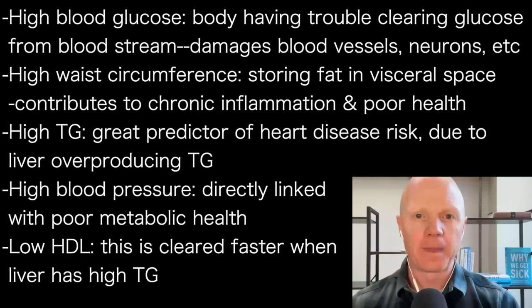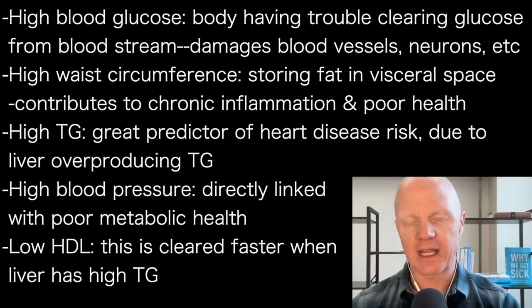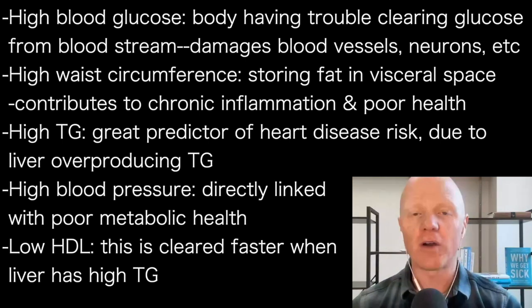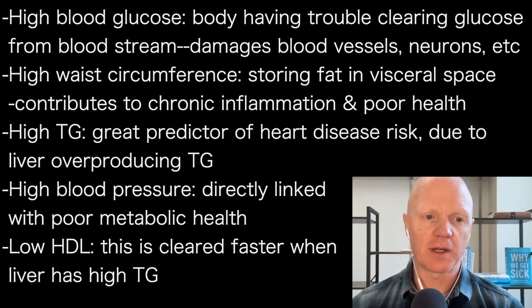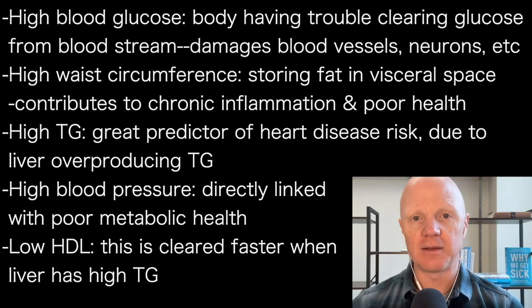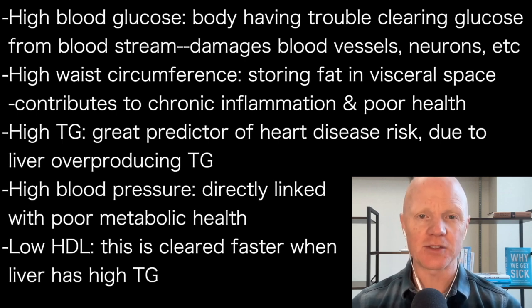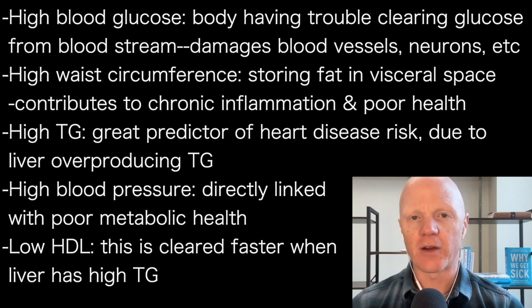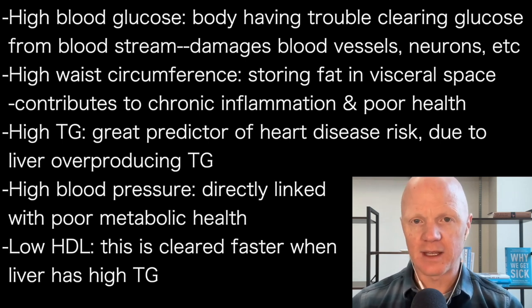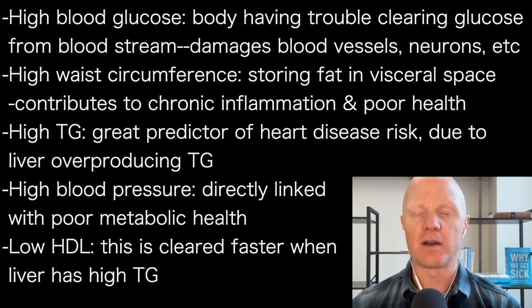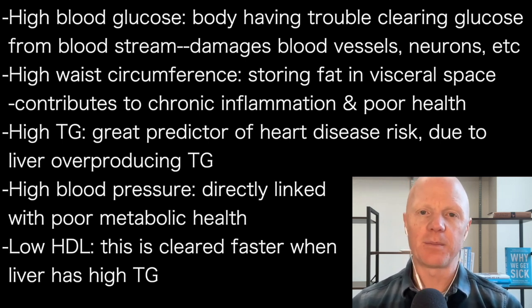High triglycerides is a feature of the metabolic syndrome and is a very good predictor of heart disease risk. As the liver starts to suffer, it begins to overproduce triglycerides. At the same time, it increases the clearance of HDL cholesterol, reducing HDL levels — considered to be the beneficial carrier of cholesterol. And lastly, high blood pressure, which is directly related to and a consequence of metabolic health. Those are the five — the cluster of complications that make up the metabolic syndrome.